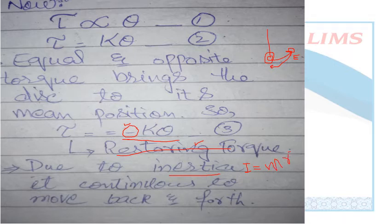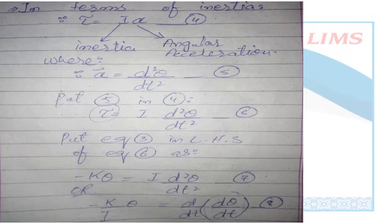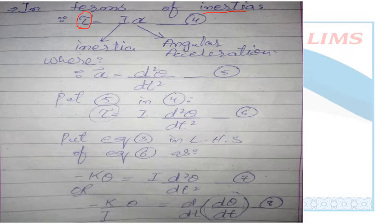We have now considered inertia. Due to inertia, even without applying an external force, the body starts to move — it starts to provide oscillations. Now, in terms of inertia — considering the body's own resistive force — the relation between torque and inertia is: torque = I·alpha (Equation 4). You do not need to prove this equation; it is a direct relation.